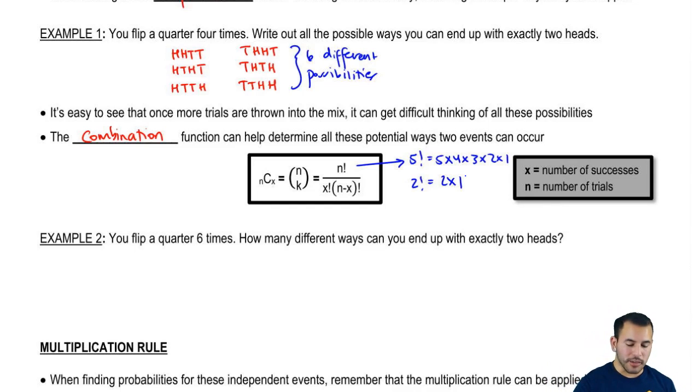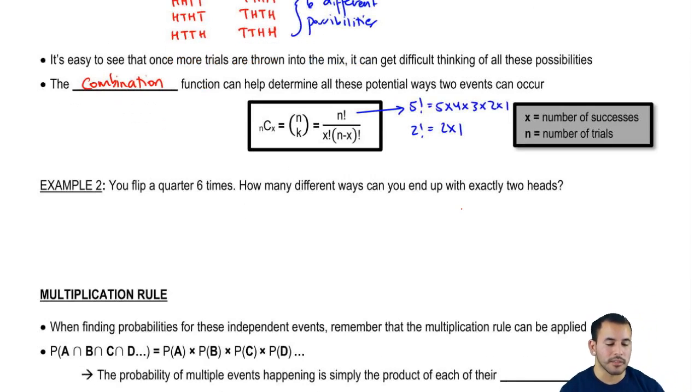Cool. So let's apply this. We have a quick example right here. You flip a quarter 6 times. How many different ways can you end up with exactly 2 heads? N is our number of trials, so we have 6C. And what's the number of successes that we want? We see that heads is our success, so 2 heads is going to be our X, so 2.